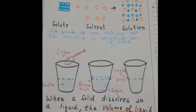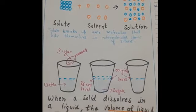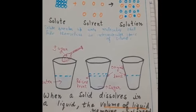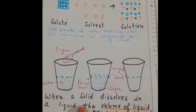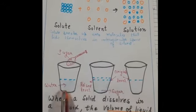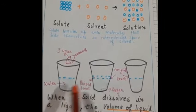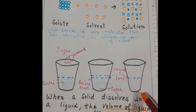So what we would conclude? We conclude that when a solid dissolves in a liquid, the volume of liquid remains unchanged. As you can see, the initial and the final volume of the solution is same. So when you dissolve sugar in water, the volume of the water remains same.